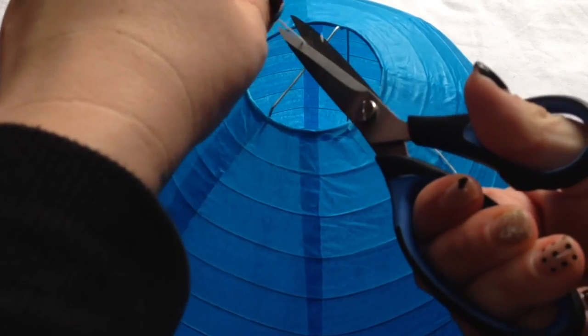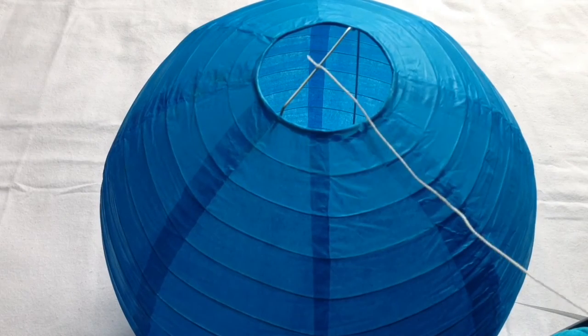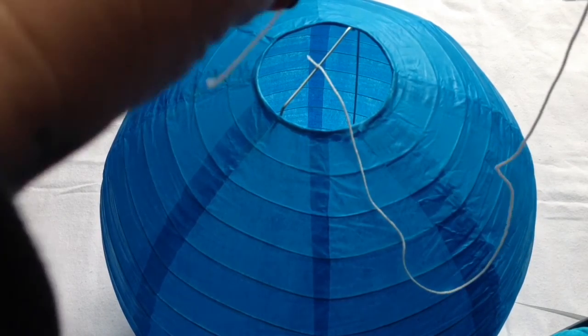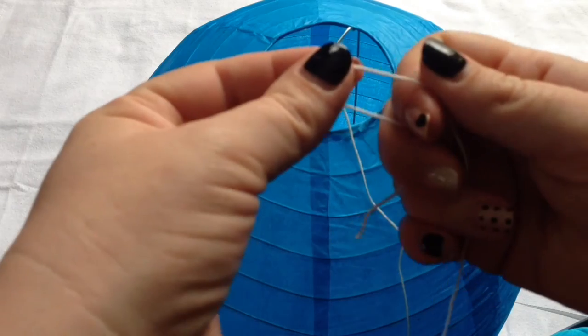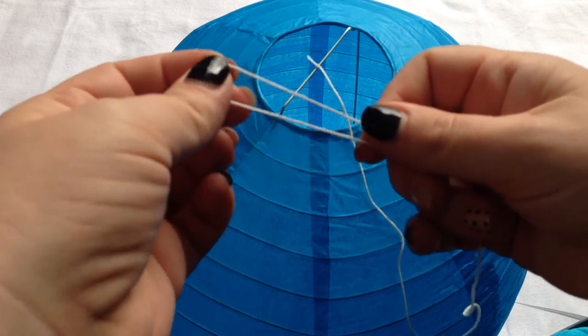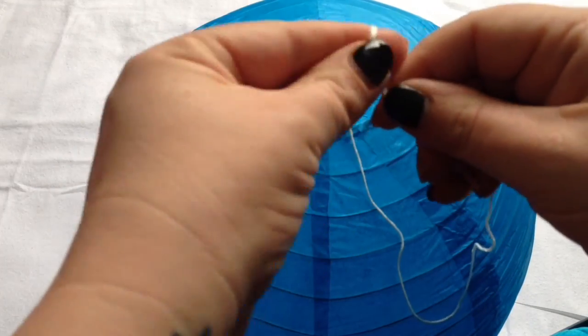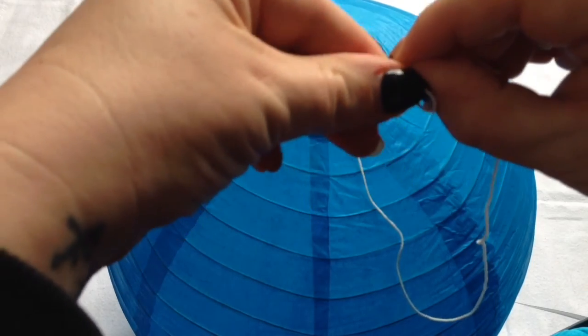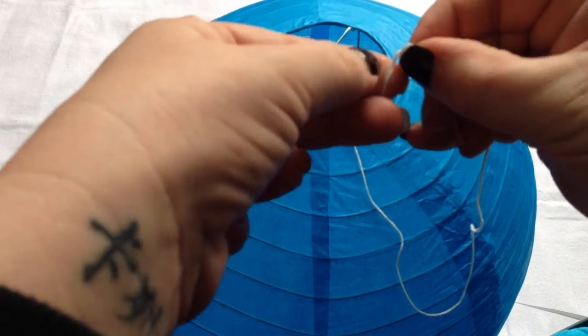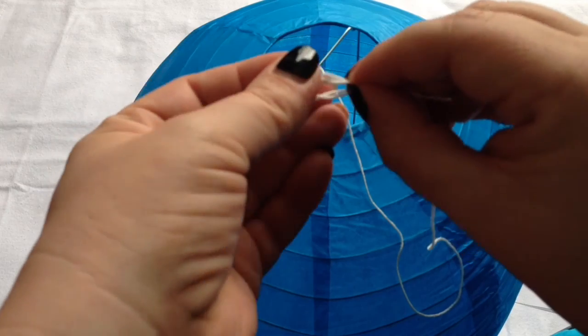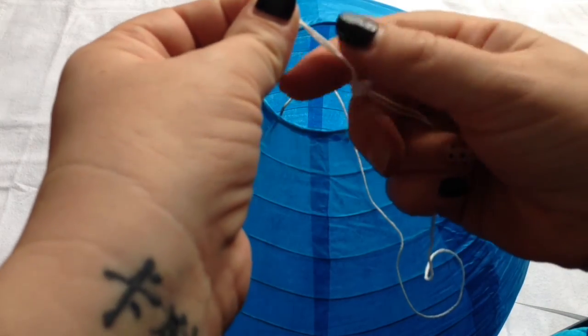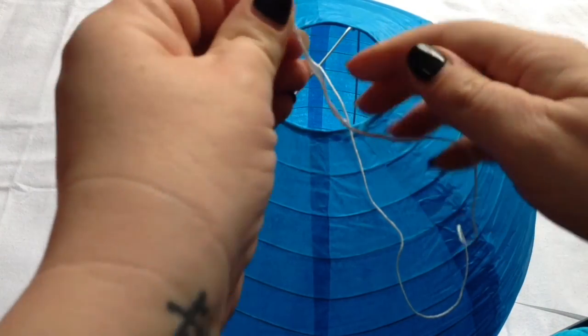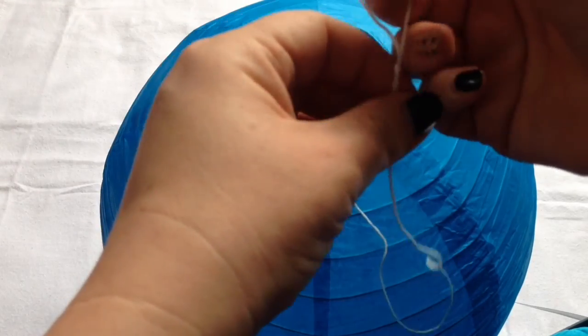And then on the other end of the string I just made a little loop like so. Just double it over and tie a knot there so that you end up with a little loop just to hook it onto the ceiling. And that's it, we are all done.